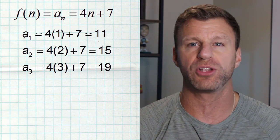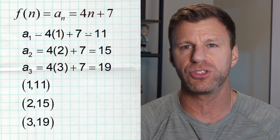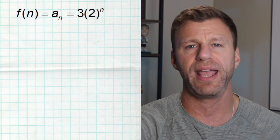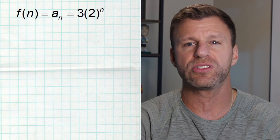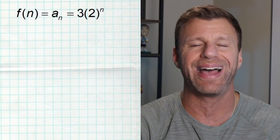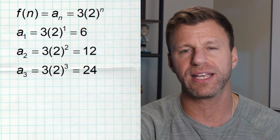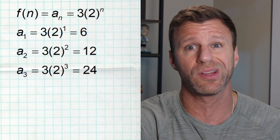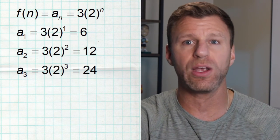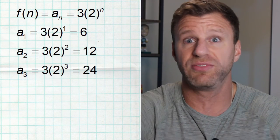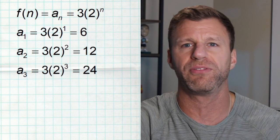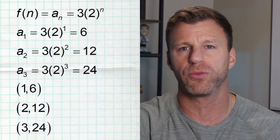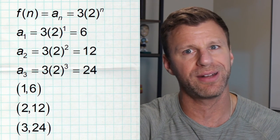For the graph, we'd plot the points (1, 11), (2, 15), and (3, 19). Here's a second example where a sequence is defined as 3 times 2 raised to the n. Plugging in one gives the first term of 6, two gives the second term of 12, three gives the third term of 24, and for the 49th term you simply plug in 49. As a sequence we list these as 6, 12, 24, 48 — we're multiplying by 2 each time. As graph points we'd have (1, 6), (2, 12), (3, 24) with nothing in between.